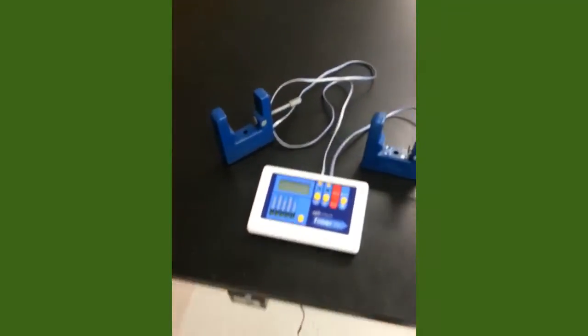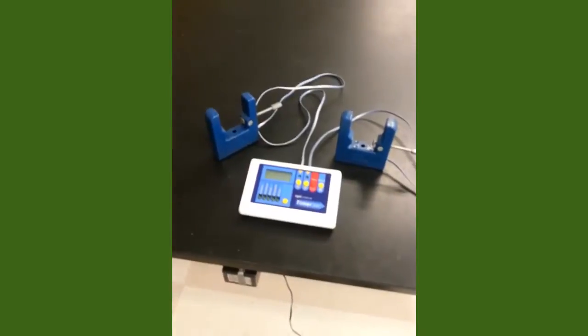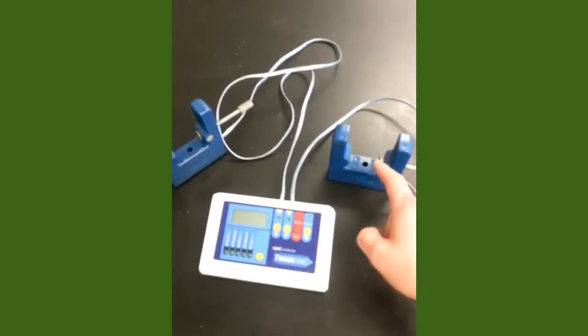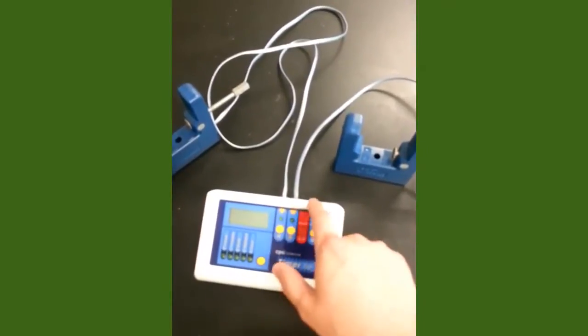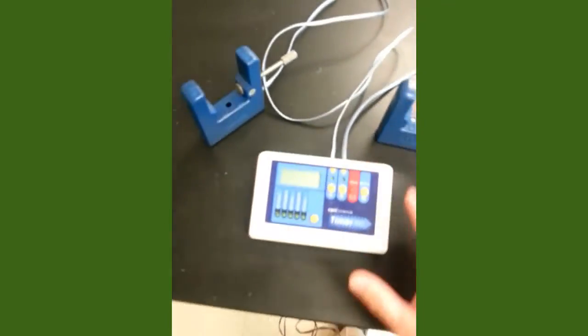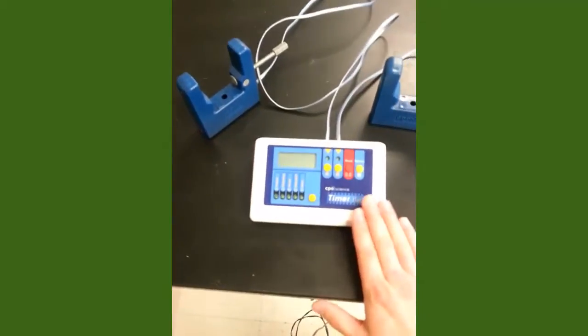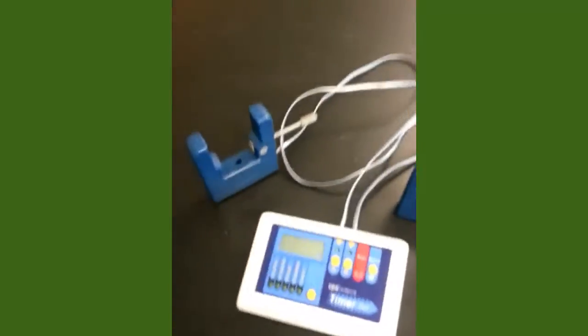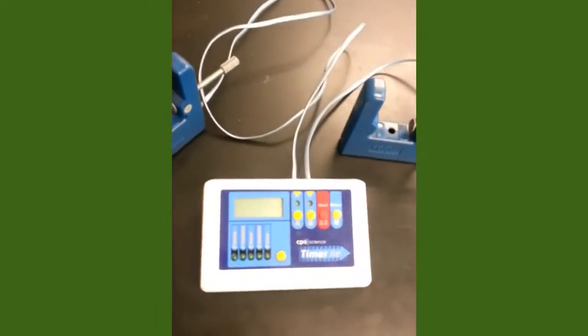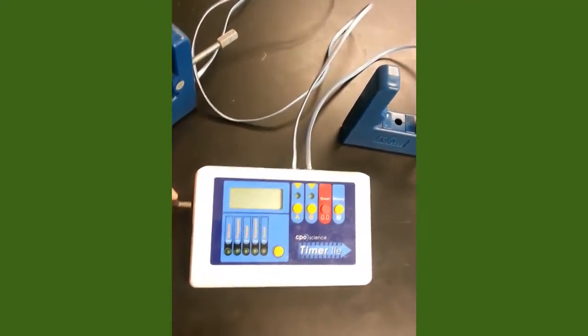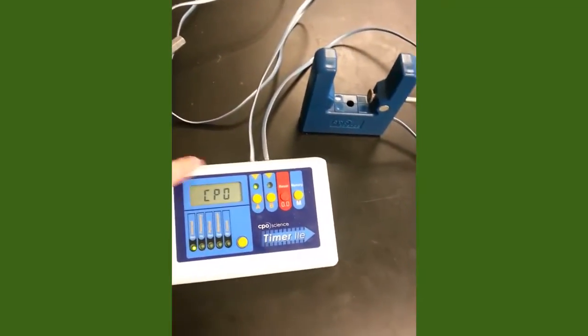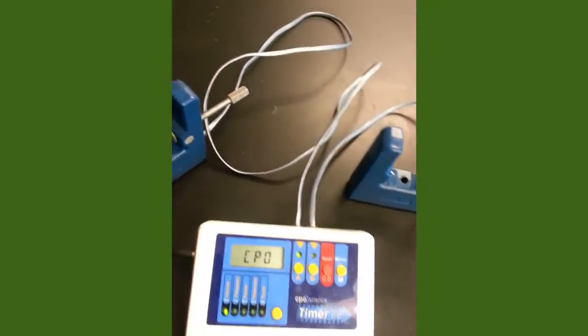Alright here guys, this is a typical setup for our CPO timers. Here is photogate A, here is photogate B. A is plugged into A, B is plugged into B right here in the back. Right here we will call this our computer, we could also call it a stopwatch if we want to. It has many different functions. We today are going to play around with the photogate interval settings for seeing how long it takes for certain objects to go through our photogates, these devices right here on the left and the right.